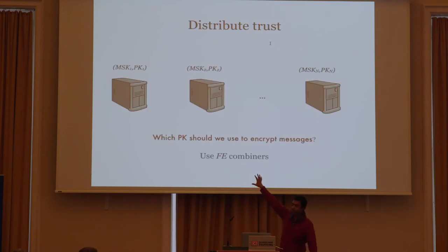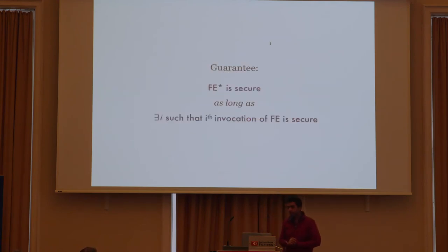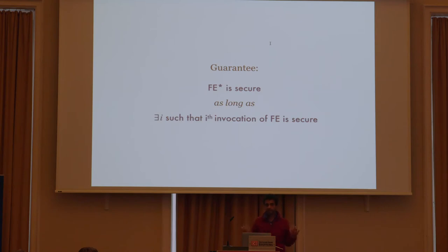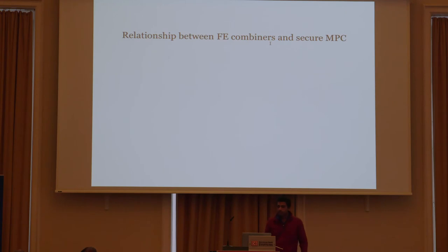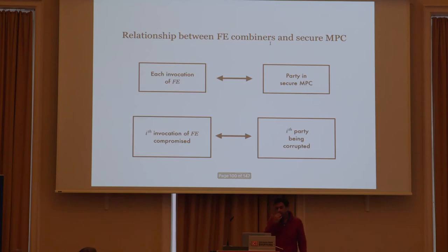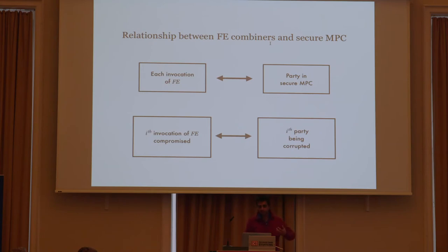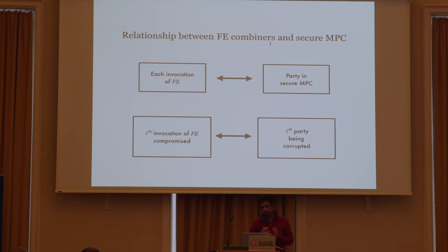Recall that I'm still using the same FE scheme throughout — just running different instantiations. The guarantee here is somewhat different from the traditional FE combiner guarantee: the resulting instantiation is secure as long as the adversary cannot obtain all the secret keys of the original instantiations. I can view every invocation of the FE scheme as a party in the secure MPC protocol, and if the i-th invocation of FE is compromised, that corresponds to the i-th party in the MPC protocol being corrupted. This is how FE combiners are related to secure MPC protocols, and I'm going to use this analogy to construct MPC protocols.